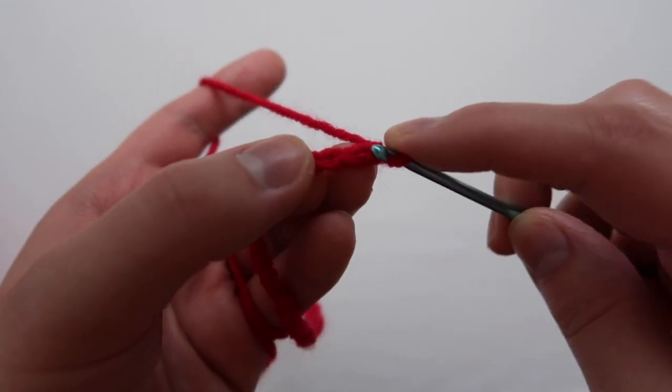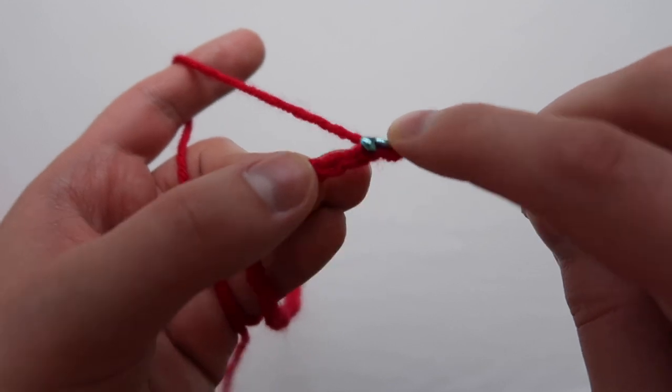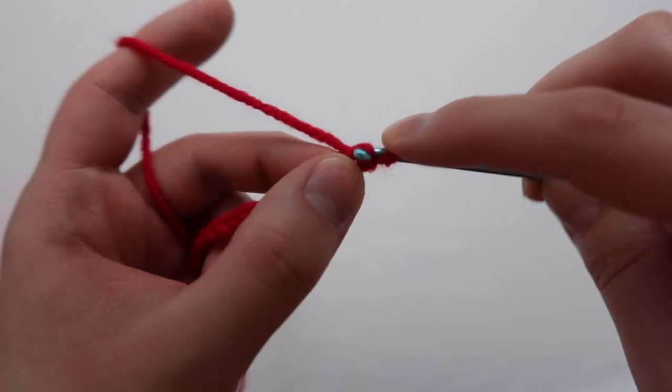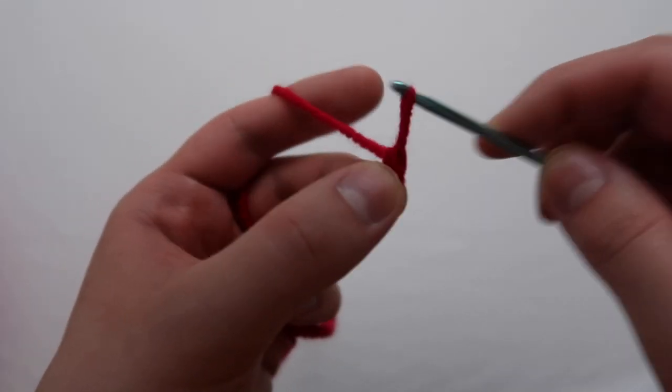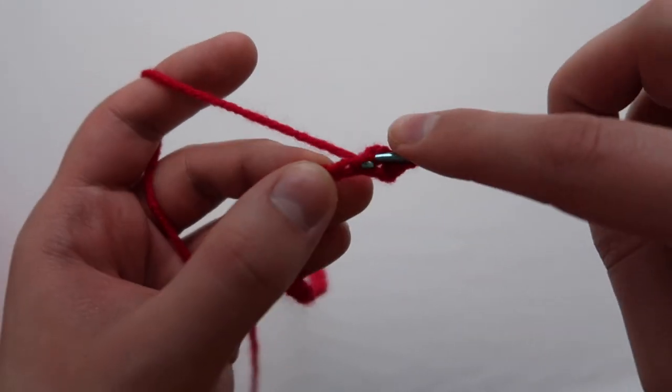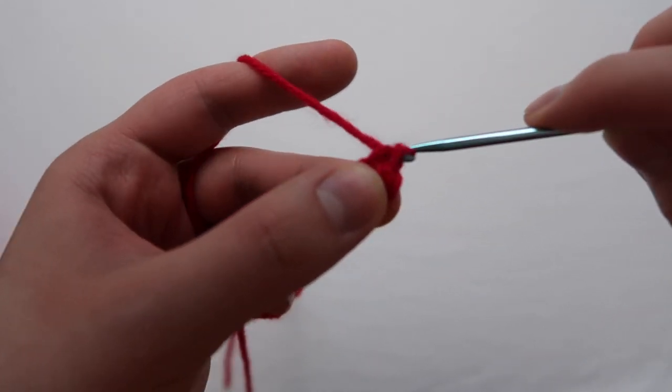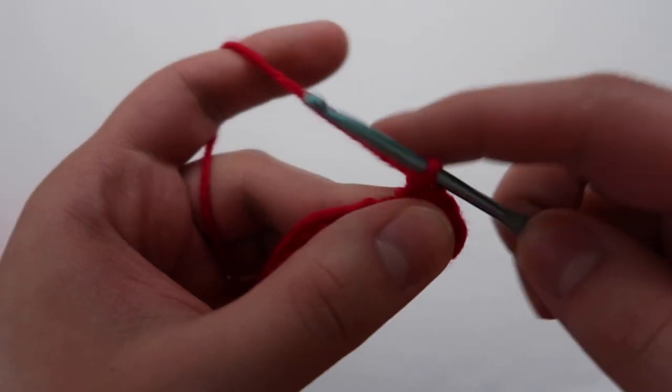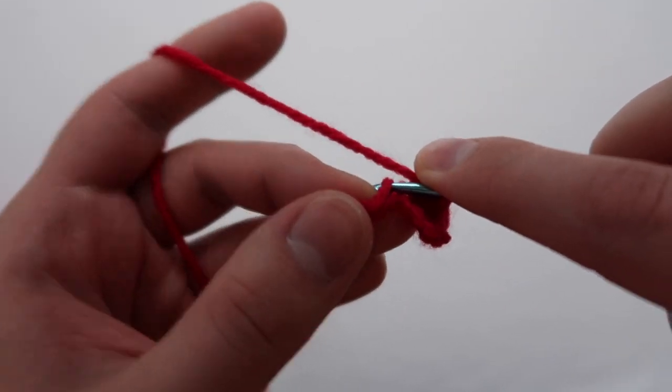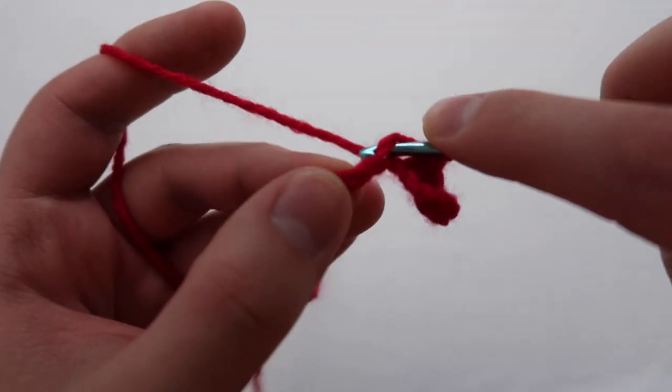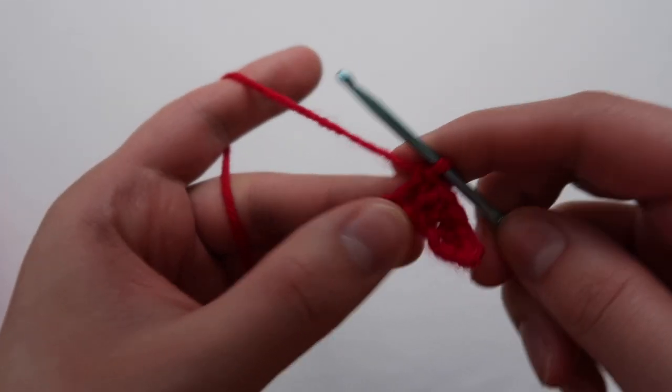We're going to start off our first row by doing 10 single crochets. Chains can be a little tricky to get into especially for the first row, so don't worry if it's a little tight and finicky. To do a single crochet, put your hook in the chain, pull up a loop, then you'll have two loops on your hook. Go around the yarn one more time, pull through both loops, and then do it again.